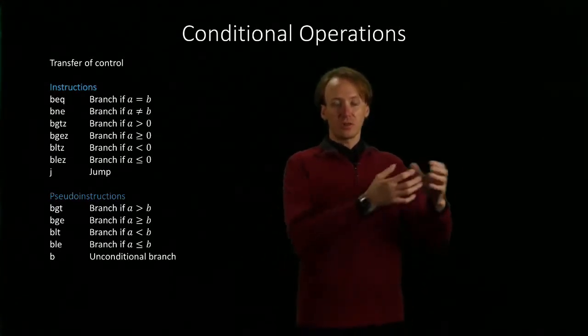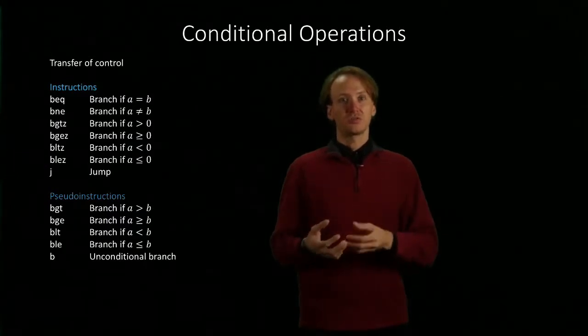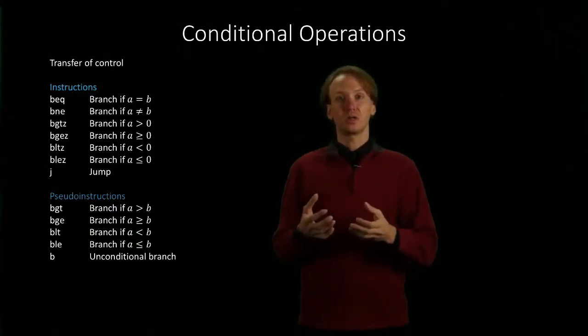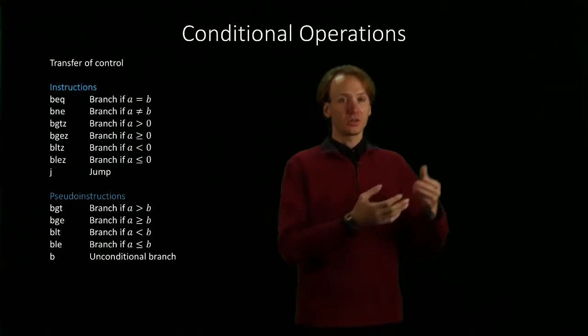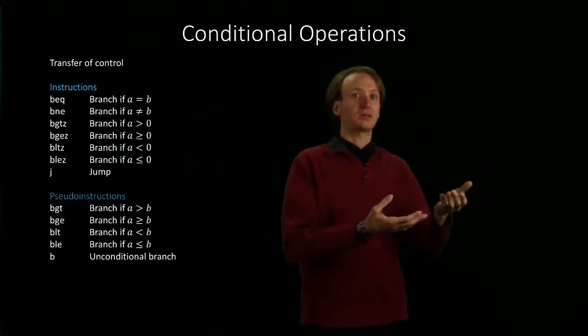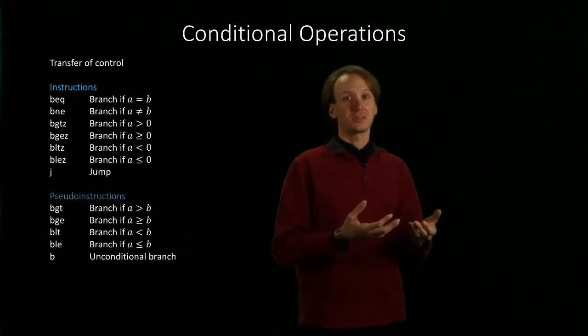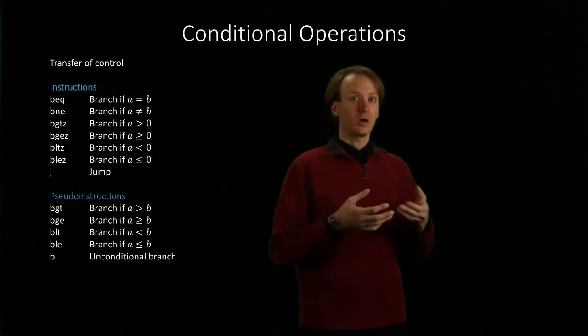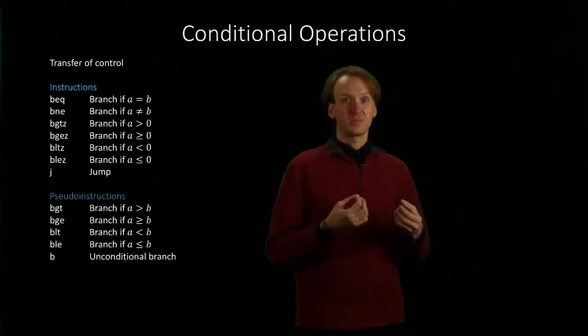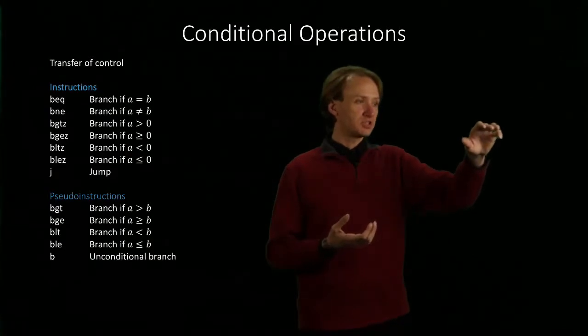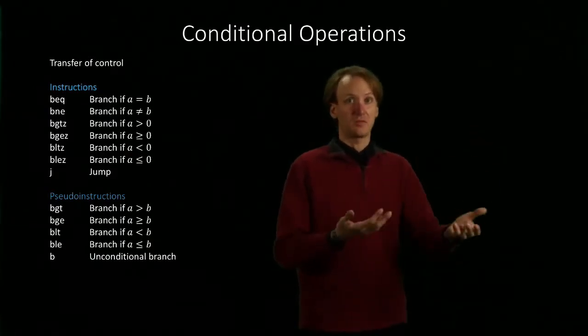We can't say run this block if this is true, otherwise run that block. All we can do is tell the machine, go to this line of code and start running it. We will have to delineate blocks of code on our own. If we don't provide specific instructions to delineate those blocks, the machine will just keep running the next line of code.